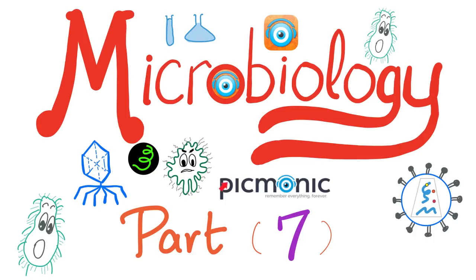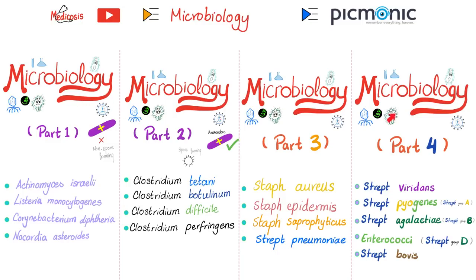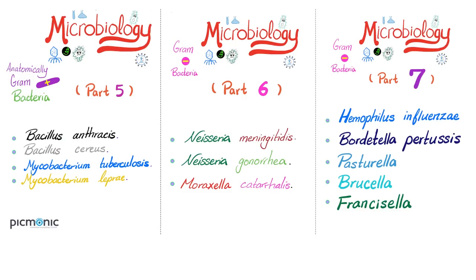Today we're gonna continue the series of Picmonic Microbiology. I've organized this series in two playlists: Medicosis Picmonic and Microbiology. In video one we talked about Actinomyces, Listeria, Corynebacterium, and Nocardia. Part two was Clostridia. Part three: Staph aureus, Staph epidermidis, Staph saprophyticus, and Streptococcus pneumoniae. Part four was about Streptococci. Video five covered Bacillus anthracis, Bacillus cereus, Mycobacterium leprae, and Mycobacterium tuberculosis. Part six was Neisseria and Moraxella.